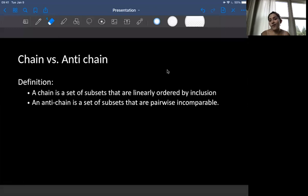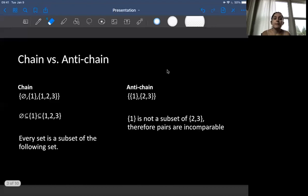So words aren't as helpful as numbers in this case, so let's get straight into some examples. So for a chain, it is a set, and within the set of the chain there are many subsets. So one example of this would be the empty set 1, 1, 2, 3, where we see that the empty set is a subset of 1, which is a subset of 1, 2,